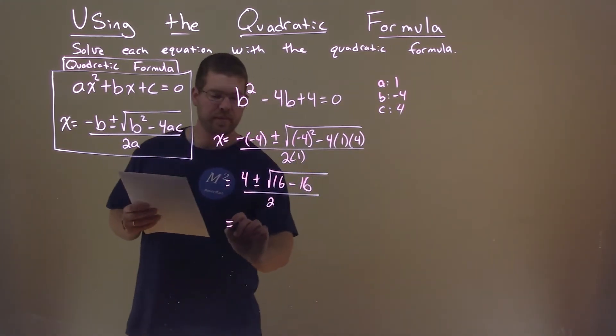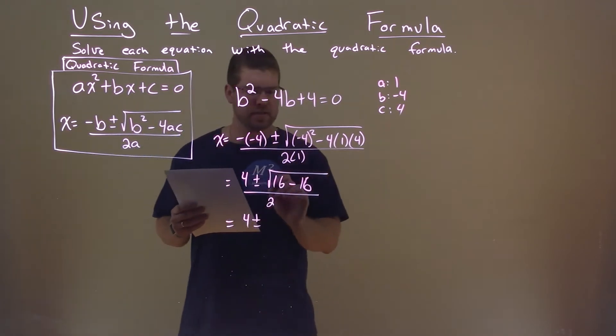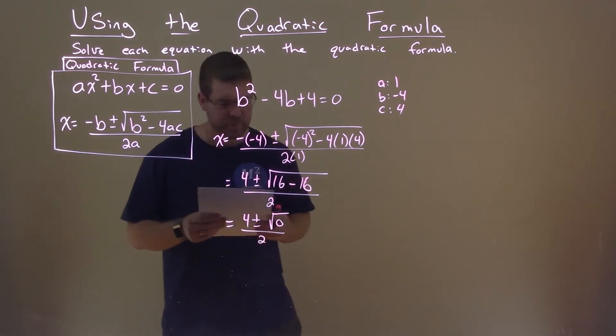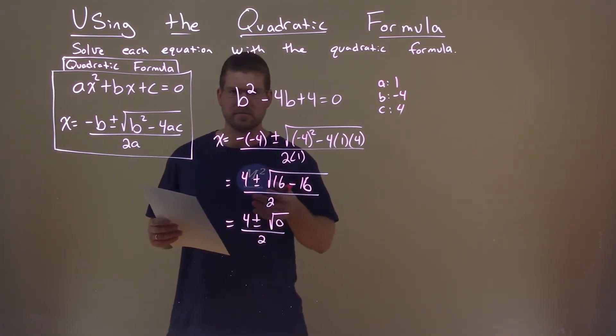So now let's keep simplifying. 4 plus or minus, 16 minus 16 is 0, so the square root of 0 over 2. And what's the square root of 0? 0.